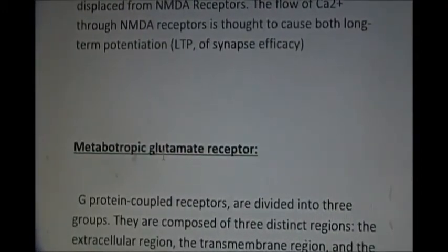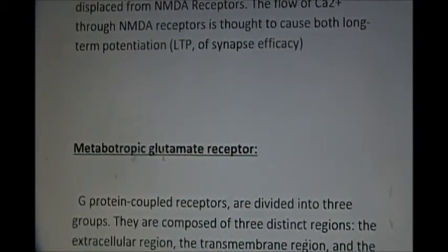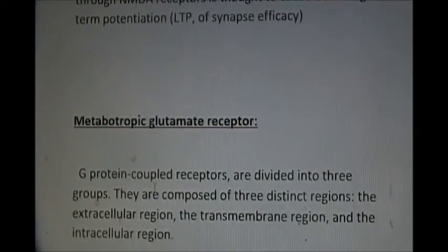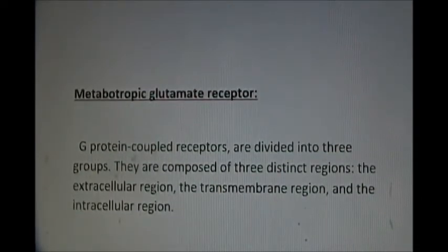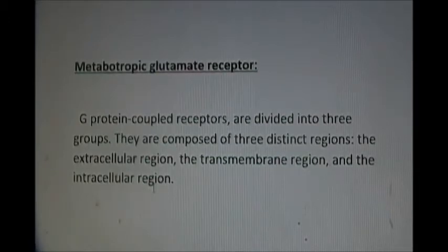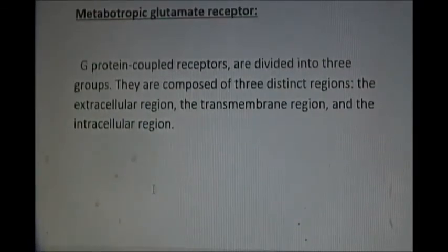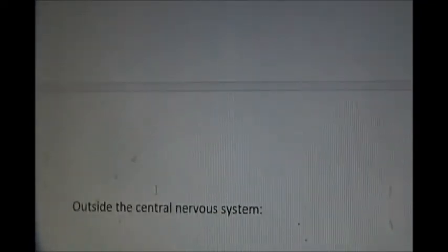The metabotropic glutamate receptors are G protein-coupled receptors that evoke a cascade of events leading to the generation of action potentials. There are three types: they may be extracellular, transmembranous, or intracellular.